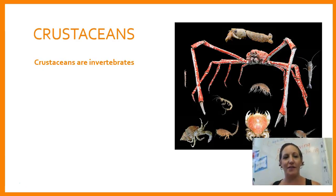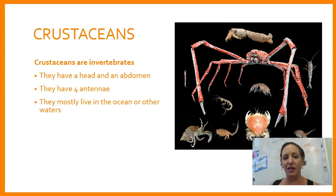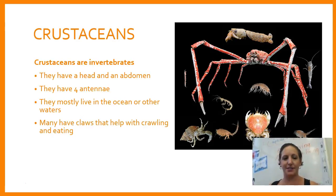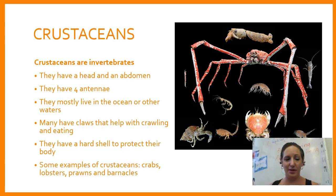Crustaceans are invertebrates. They have a head and an abdomen, four antennae, and mostly live in the ocean or other waters. Many have claws that help with crawling and eating, and they have a hard shell to protect their body. Some examples of crustaceans include crabs, lobsters, shrimp, and barnacles.